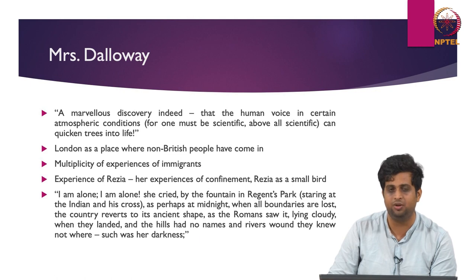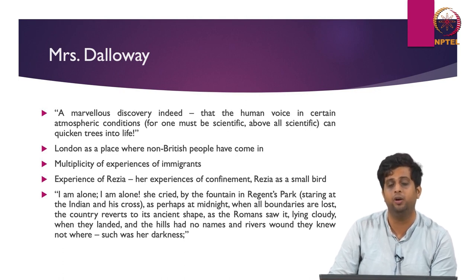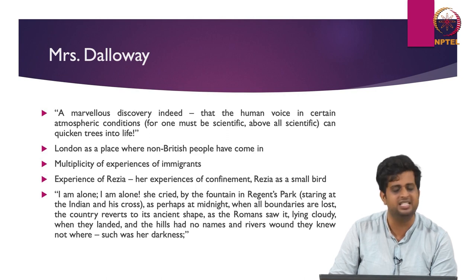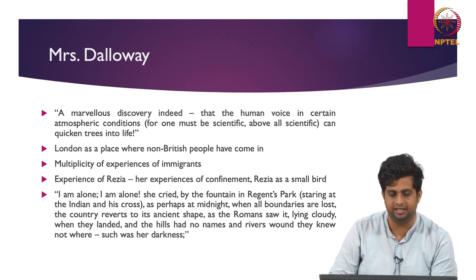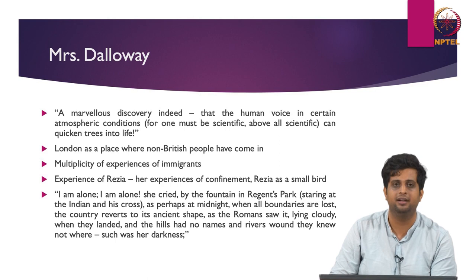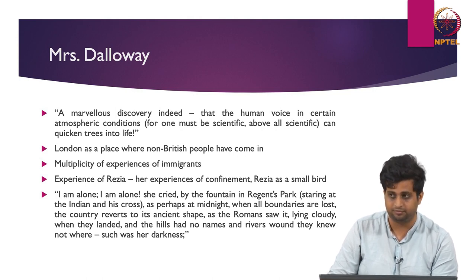Instead of listening to what Septimus is trying to speak, Rezia tries to find a solution to make him stop talking, which causes Septimus to recoil more and more within himself as he is obstructed from speaking. She stops listening, and for Septimus her actions become interruptions in his mode of thought. Woolf writes of Rezia: 'She was like a bird sheltering under the thin hollow of a leaf who blinks at the sun when the leaf moves, starts at the crack of a dry twig. She was exposed, surrounded by the enormous trees, vast clouds of an indifferent world — exposed, tortured, and why should she suffer, why?'